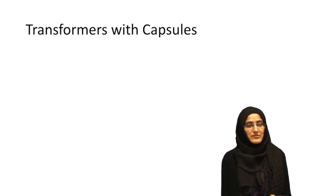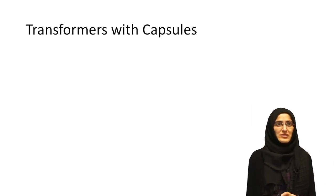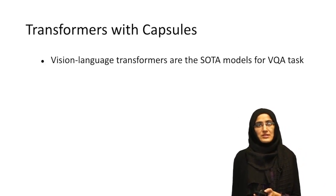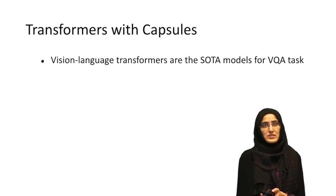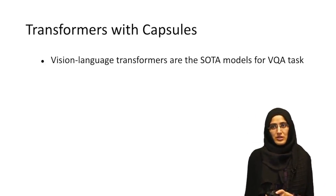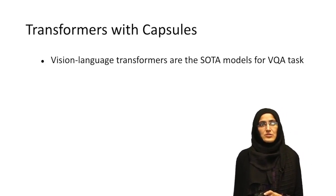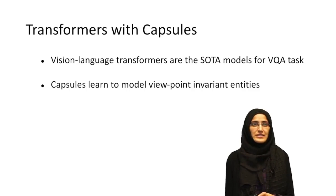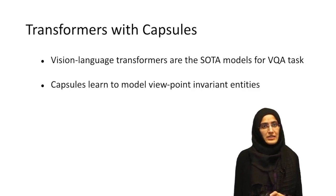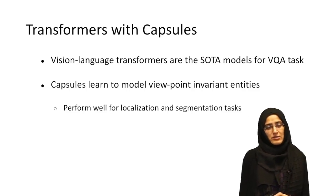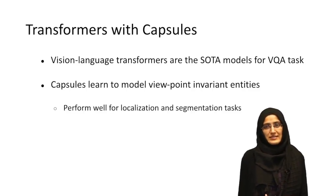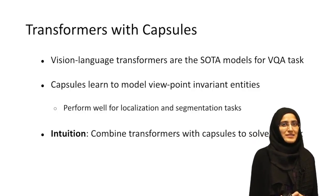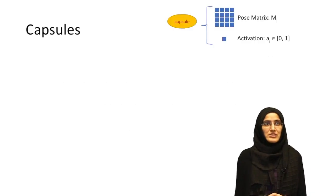How do we solve this task? We propose to combine transformers with capsules. Visual language transformers are the state-of-the-art models for VQA tasks. Capsules, on the other hand, learn to model viewpoint-invariant entities, and they perform very well on localization and segmentation tasks. The intuition here is to combine transformers with capsules to solve this task.